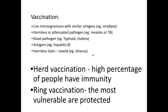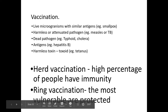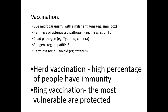There are two different ways in which the government can use vaccinations. One of them is herd vaccination, where a high percentage of the population will have immunity to a certain disease, and therefore if they have immunity to it, it's less likely to be passed on to other people. Ring vaccination is where only the most vulnerable people are protected — usually those who are elderly or young.